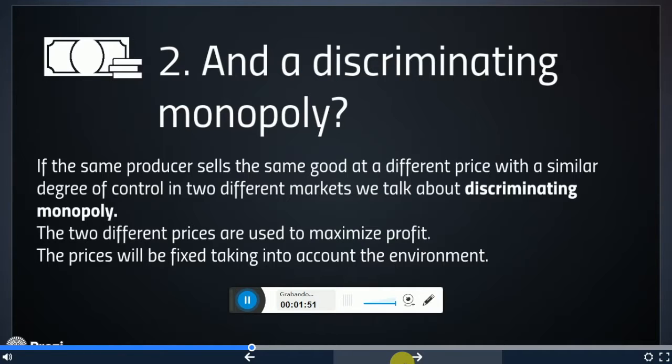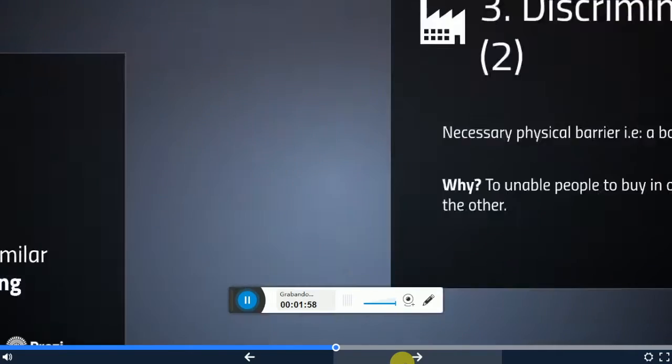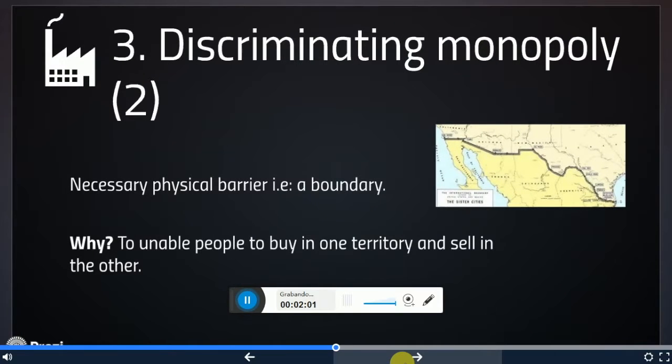Also, there is one requirement that is needed to talk about discriminating monopoly, which is the existence of a physical barrier between the two markets to prevent someone from buying products in the cheaper market and selling them in the most expensive one.